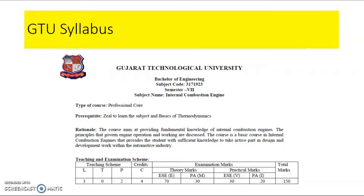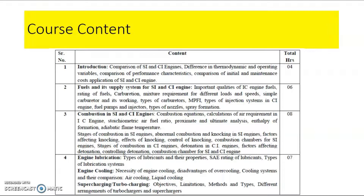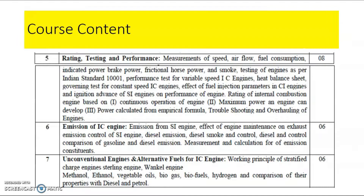The GTU syllabus for the subject is given and the credit is four. The subject consists of seven different chapters: first is Introduction; second is Fuel and its Supply System for CI and SI Engines; third is Combustion in CI and SI Engines; fourth is Engine Lubrication; fifth is Cooling, Supercharging and Turbocharging; sixth is Rating, Testing and Performance of an IC Engine; and the seventh is Emission of IC Engines and Unconventional Engines and Alternative Fuels.